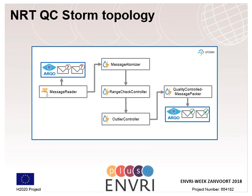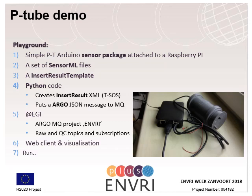To test and demonstrate our approach, we have set up a playground which we call the p-tube demo. The playground consists of a simple pressure-temperature Arduino sensor package which is attached to a Raspberry Pi. A set of SensorML files describes the sensor itself. We have provided an insert result template, which is required for the insert result SOS message. Some Python code creates insert result XML from the sensor values and puts an Argo JSON message to the message queue.